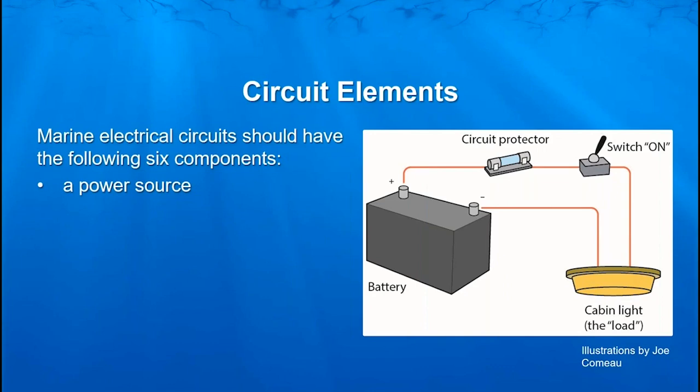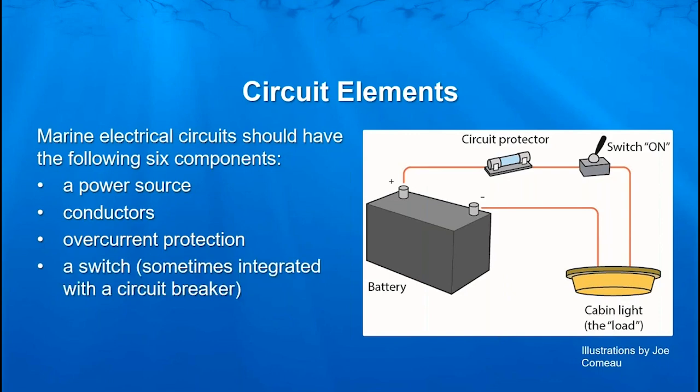Let's move further into the complexity of our electrical systems and identify the components that we have in our electrical circuits. We're going to have a power source — in this drawing, it's a battery; in AC, it's going to be our shore power. We have our conductors, which is our wiring connecting all of our components. We've got an overcurrent protection device — hopefully installed correctly per ABYC standards — which is our circuit breaker or fuses. We've got a switch to control the load, which sometimes can just be that breaker if it is a switchable breaker. And we have the load — in this case, a cabin light.